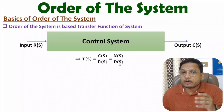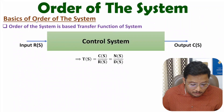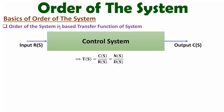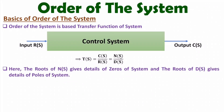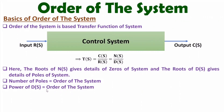The total number of poles gives you the order of the system. The numerator polynomial N(s) gives details of zeros, and the denominator polynomial D(s) gives details of poles. The total number of poles — or equivalently the power of the denominator — is the order of the system.